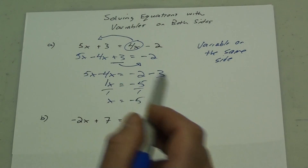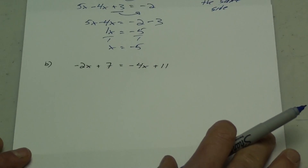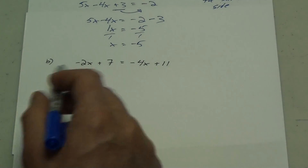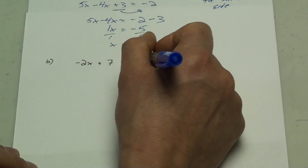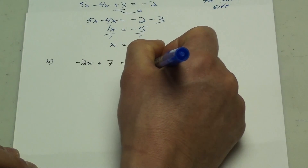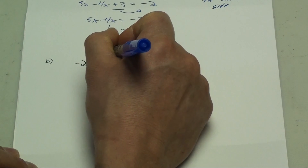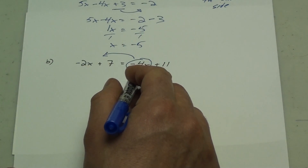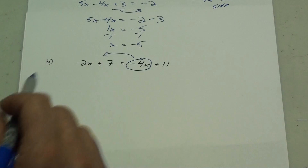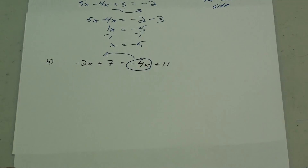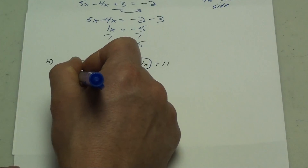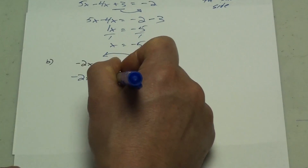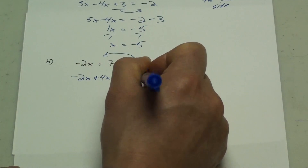Get all your variables on the same side. Here's another example. I want to move all my variables on the same side, so the first thing I'm going to do is move this minus 4x over to that side. It's a minus 4x on this side. When it moves across the equal sign, it'll turn into its opposite, which is plus 4x. So I have negative 2x plus 4x plus 7 equals 11.